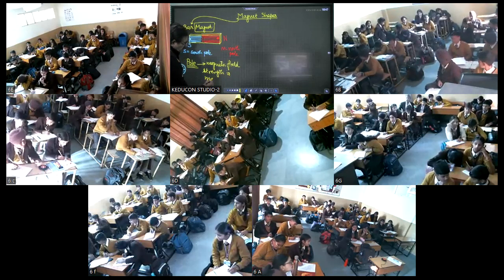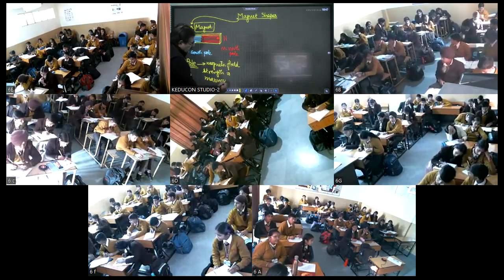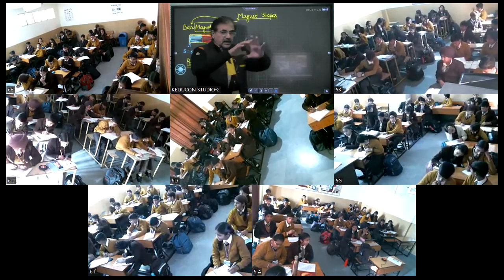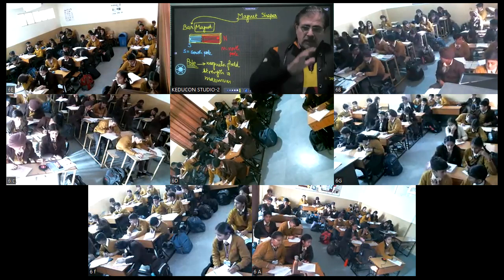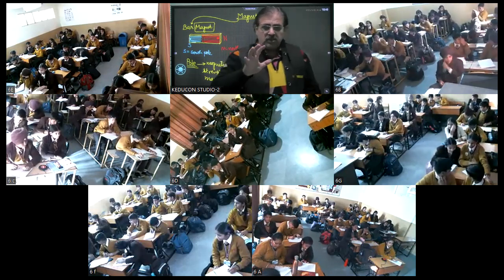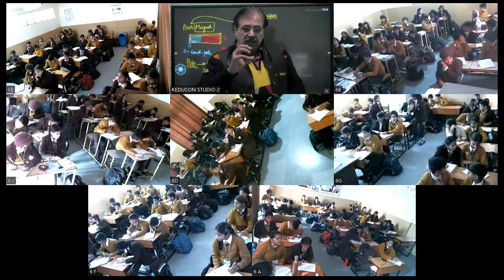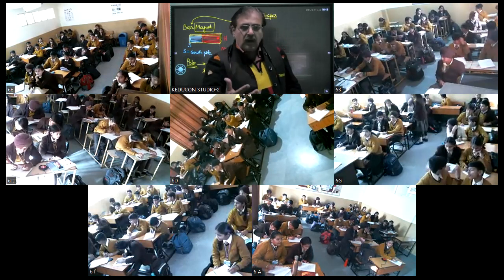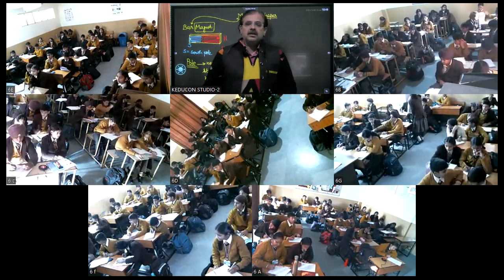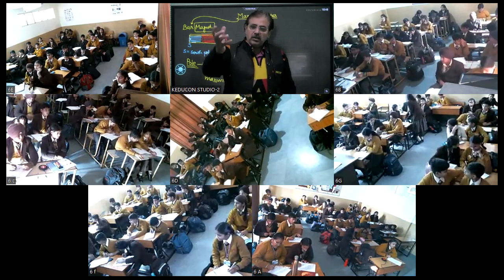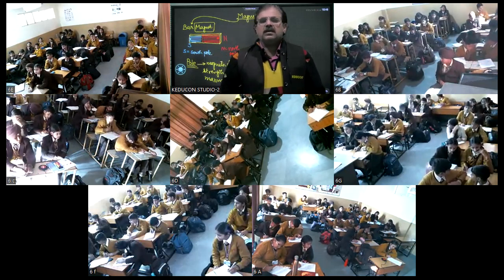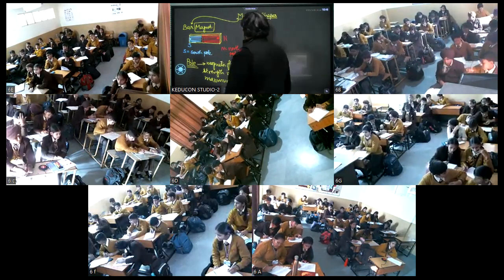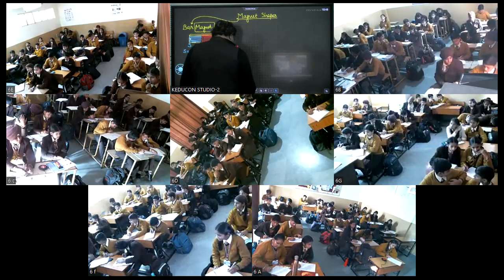बच्चे पूछते हैं field का क्या मतलब? Field का मतलब है: magnet के इर्द-गिर्द वो सारा three-dimensional area — ऊपर, नीचे, आगे, पीछे — जिसके अंदर magnet अपना प्रभाव show कर सकती है। जैसे लोहे की कील magnetic field के अंदर होगी, तो magnet उसे खींच लेगी।